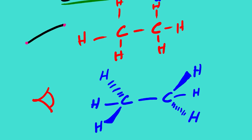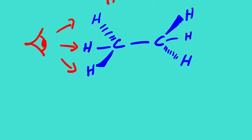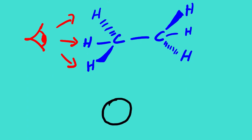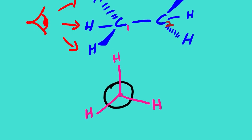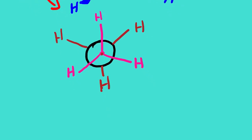When we view it from this angle we are going to have something like this: carbon number one and carbon number two. We are going to see carbon number one having three hydrogens, and then just behind carbon number one there is carbon number two with three hydrogens. Looking at this diagram, we call this a Newman projection.